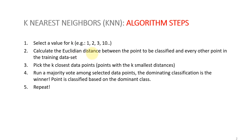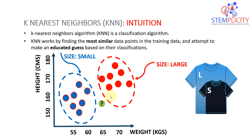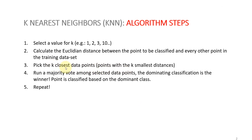Third step: pick the K closest data points — those with the K smallest distances. So we select K, calculate the Euclidean distance to all points, and select the K closest ones. Then we run a majority vote among those selected data points. If three say you belong to the large class and one says small, large wins. The dominating classification is the winner, and the point is classified based on the dominant class.